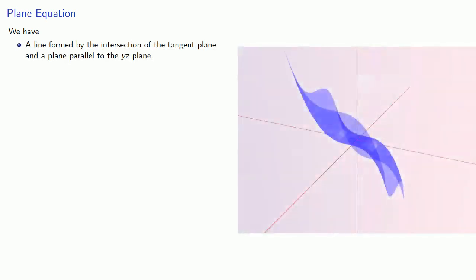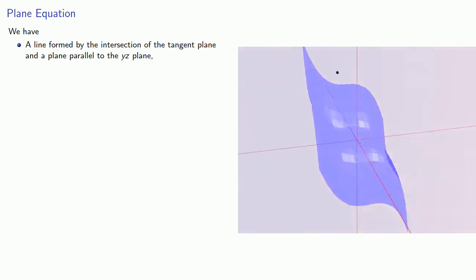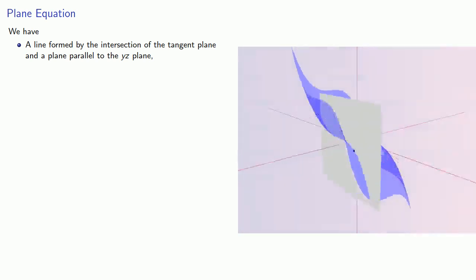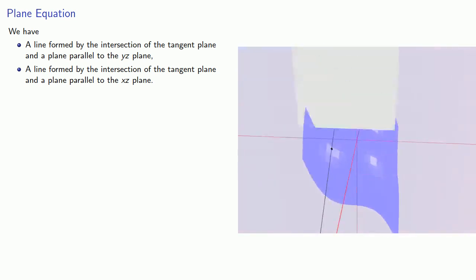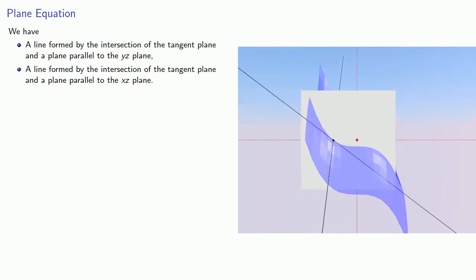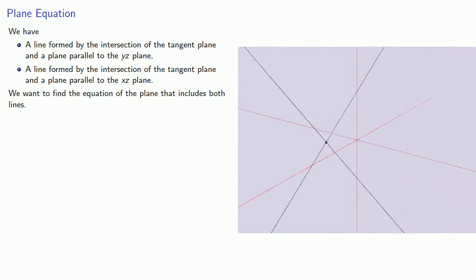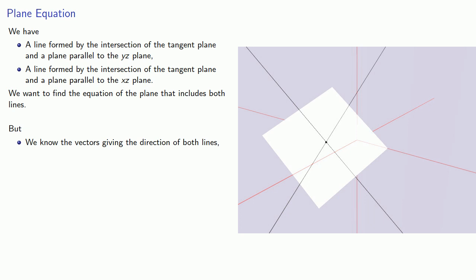So let's think about what we've done so far. We have a line formed by the intersection of the tangent plane and a plane parallel to the yz plane. We also found a line formed by the intersection of the tangent plane and a plane parallel to the xz plane. And we want to find the equation of the plane that includes both lines. But we know the vectors giving the direction of both lines, and the vector perpendicular to both will be orthogonal to the plane, and we can find this vector using the cross product.